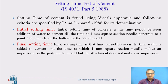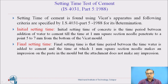IS 4031, part 5, 1988 — this particular IS code is devoted for the setting time test on cement. The setting time test on cement is performed using Vicat apparatus. This particular code specifies and gives criteria for exact determination of initial and final setting time.